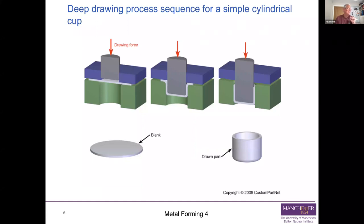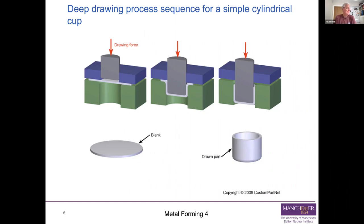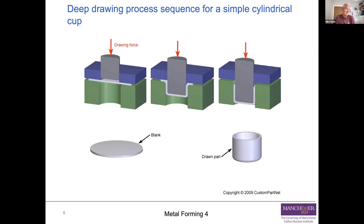Here's the deep drawing sequence for a simple cylindrical cup. You start out with a nice round blank, put it on top of the die (which is green), clamp it with a blank holder (which is blue), and down comes the punch, gradually pushing it down into the die. In this case, the whole blank is pushed down into the die and we've ended up with a completed drawn part - a simple cylindrical cup. All the material has flowed radially in between the blank holder and the die, and then down between the punch and the die.